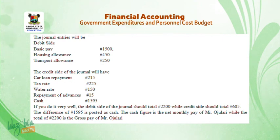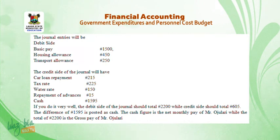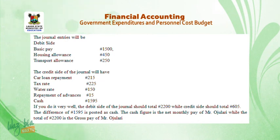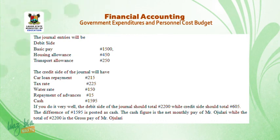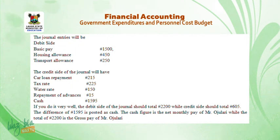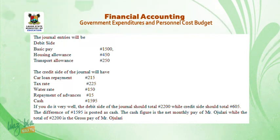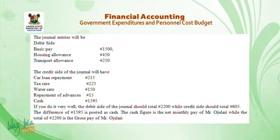The journal entries will look like this. Debit side: basic pay ₦1,500; housing allowance ₦450; transport allowance ₦250. The credit side of the journal will have: car loan repayment ₦215; tax ₦225; water rate ₦15; repayment of advance ₦15; cash ₦1,595. If done correctly, the debit side of the journal should total ₦2,200, while the credit side should also total ₦2,200. The difference of ₦1,595 is posted as cash, which is the net monthly pay of Mr. Odulary, while the total of ₦2,200 is his gross pay.